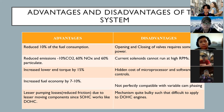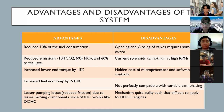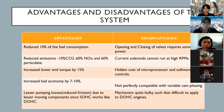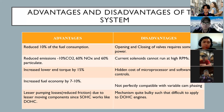The disadvantage of VTEC is that it only engages on average at 5000 to 6000 RPM, a rev range that drivers rarely explore. The disadvantages include: firstly, opening and closing valves requires some power; secondly, current solenoids cannot run at high RPMs; thirdly, high cost of microprocessor and software controls; fourthly, not perfectly compatible with variable cam phasing; and finally, the mechanism is quite bulky, making it difficult to apply to DOHC engines.